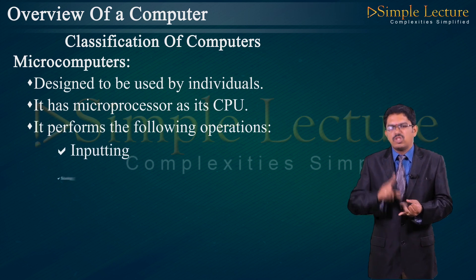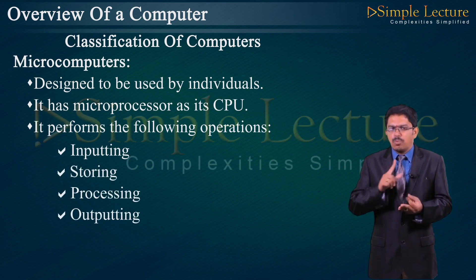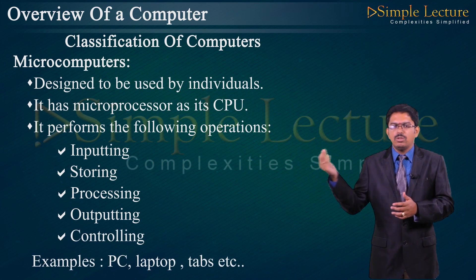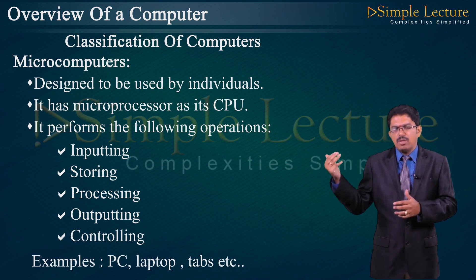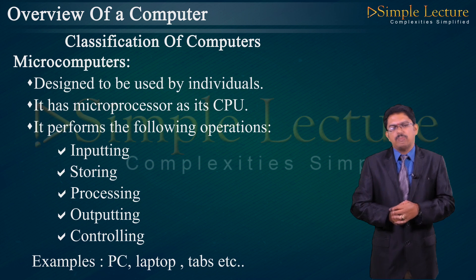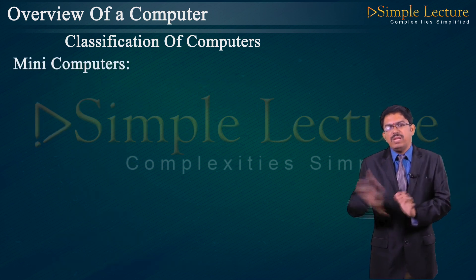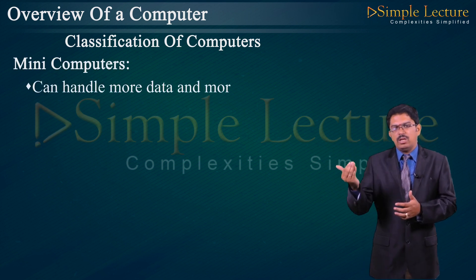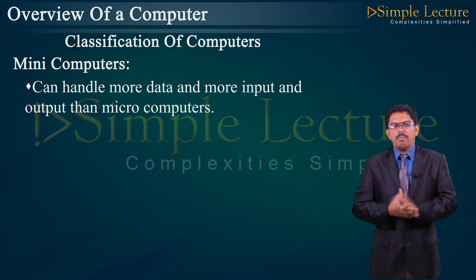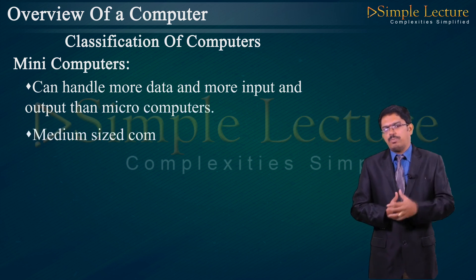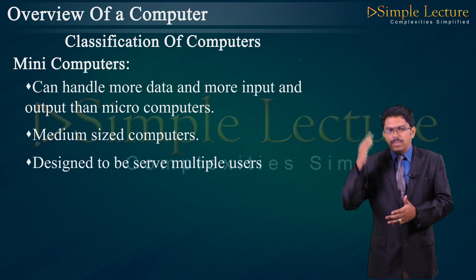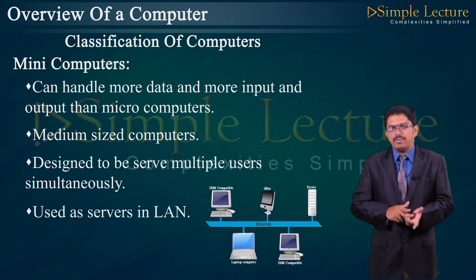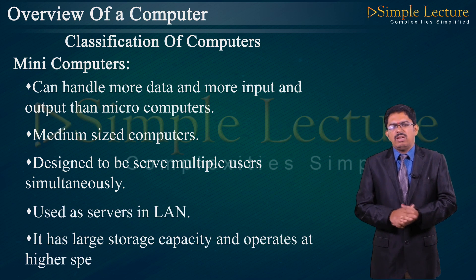Microcomputers perform operations such as inputting, storing, processing, outputting, and controlling. Examples include PCs (personal computers), laptops, and tablets. Minicomputers: the name itself indicates small. They can handle more data and more input/output than microcomputers. They are medium-size computers designed to serve multiple users simultaneously, used as servers in LANs, have large storage capacity, and operate at higher speeds compared to other versions.